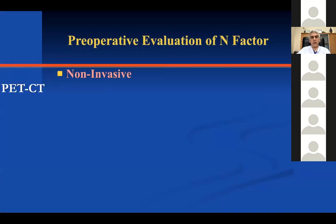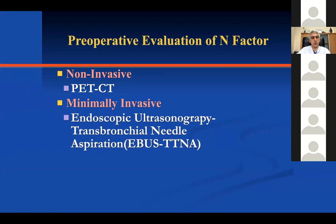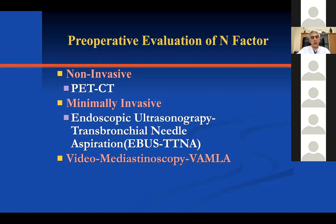How can we evaluate the N factor? PET-CT is very useful. There are also minimally invasive methods: endoscopic ultrasonography, transbronchial needle aspiration EBUS-TTNA. Video mediastinoscopy, VAMLA — video-assisted mediastinoscopic lymphadenectomy — is the gold standard. Mediastinotomy is performed for left upper lobe tumors with aortopulmonary or periaortic lymph node positivity. Extended mediastinoscopy is designed for biopsying aortopulmonary or periaortic lymph nodes. Video-assisted thoracoscopic surgery can also be used for mediastinal lymph node biopsy.